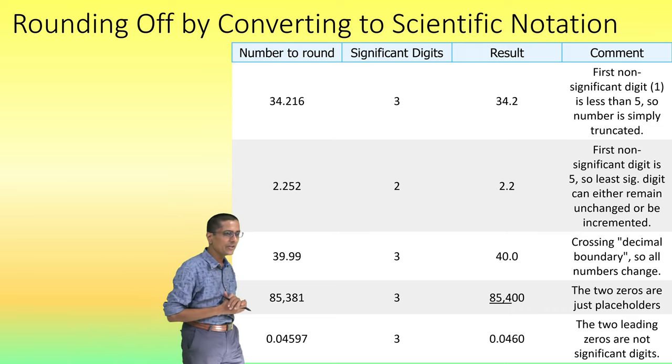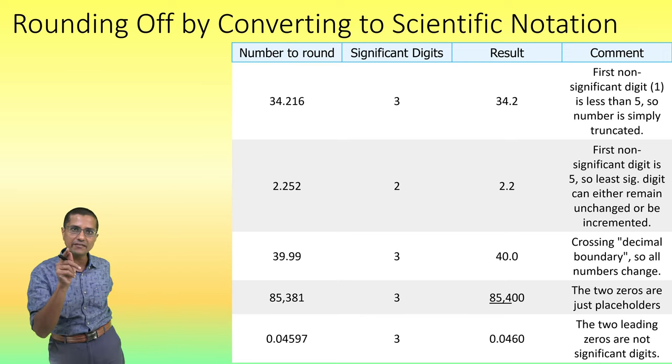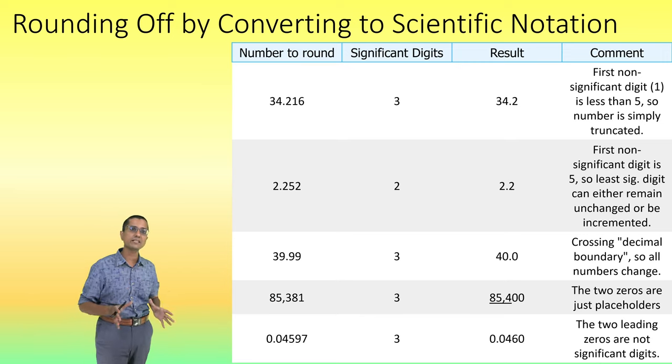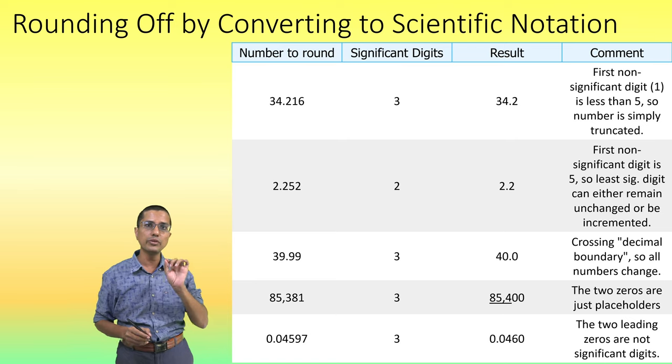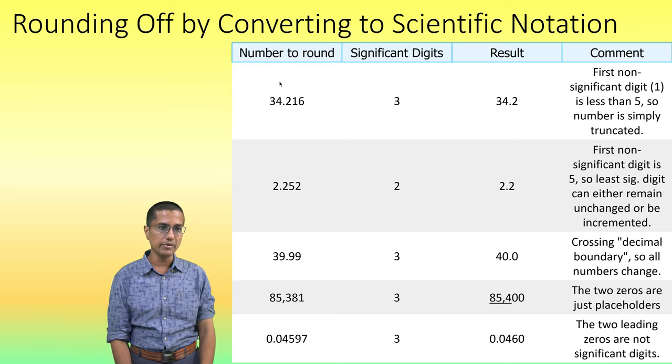When we are asked to round a number to certain significant digits, this is the method that we are going to use. We will always convert the number first to scientific notation and then we will do the rounding. So with this information, let us get started.